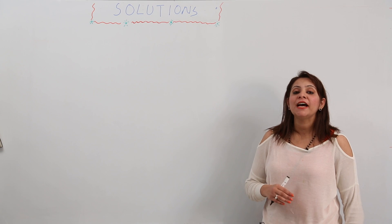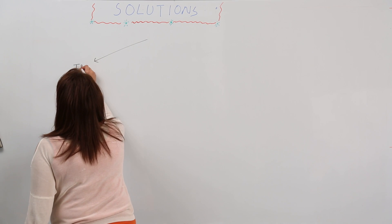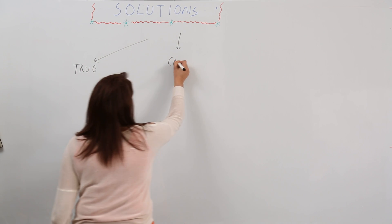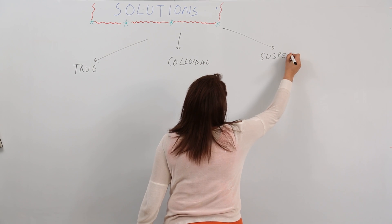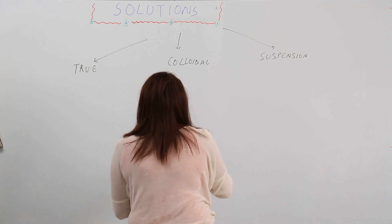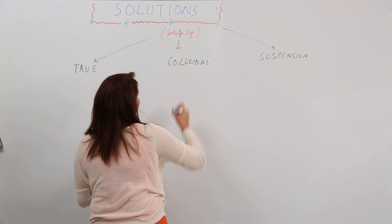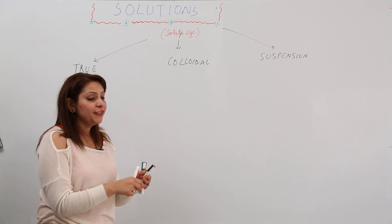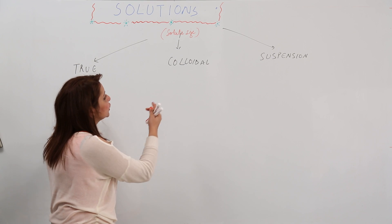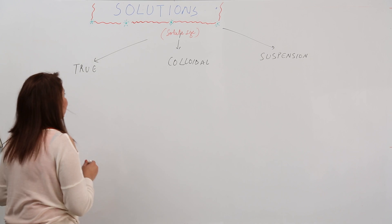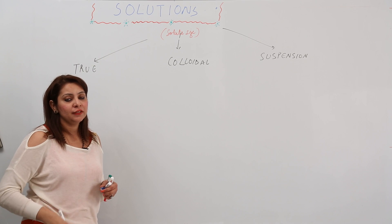On the basis of the size of the solute, solutions are classified under three categories: true solution, colloidal solution, and suspension. This classification is entirely on the basis of solute size, due to which the properties of the solutions change a little bit. I'm going to tell you the examples first, because when I explain the properties, you should already have an idea of the examples.